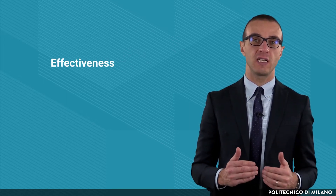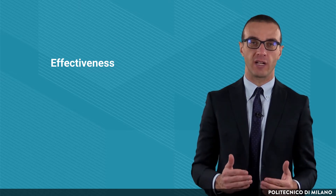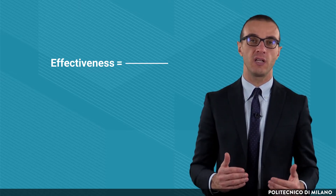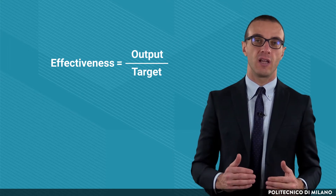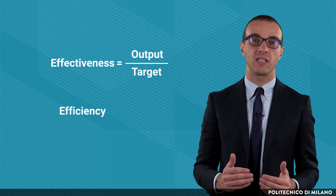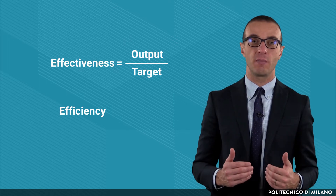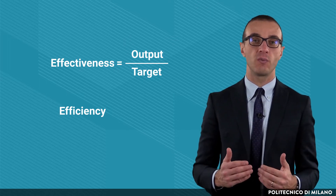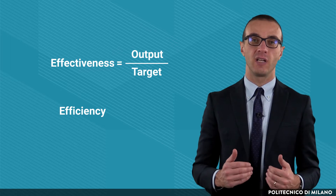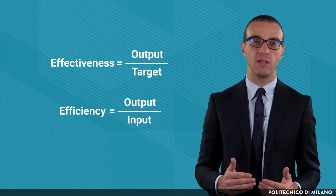Performances may refer to two main dimensions: effectiveness and efficiency. Effectiveness is intended as the capacity to achieve the objectives, and it consists in the ratio between the output and the target. Efficiency is instead intended as the ratio between the value generated by the company and the value of the resources used for that aim — thus, it is the ratio between the outputs and the inputs.